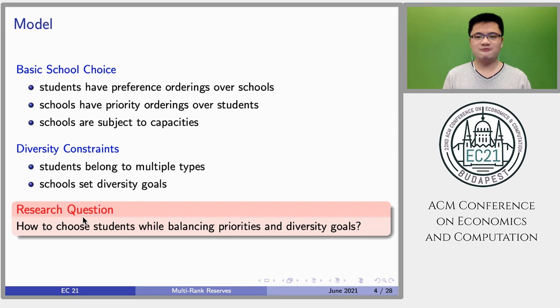Students may be from some disadvantaged groups or be talented. To achieve a diversity balance, schools typically set minimum and maximum targets for each type. The research question is, how can we match students with schools while taking the priorities and the diversity goals of schools into account?